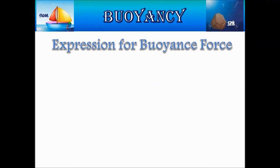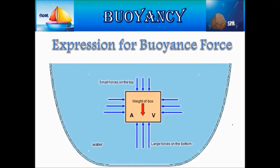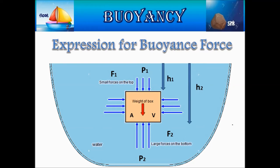Now let us derive the expression for buoyant force. Consider a container completely filled with liquid. Let us immerse a box having area of cross section A and volume V into the liquid. Let F1 be the force acting on the upper part of the box, and F2 be the force acting on the lower part of the box. P1 is the pressure acting on the upper part, and P2 is the pressure acting on the lower part. H1 is the depth from the surface of the liquid to the top of the box, and H2 is the depth from the surface of the liquid to the bottom of the box.